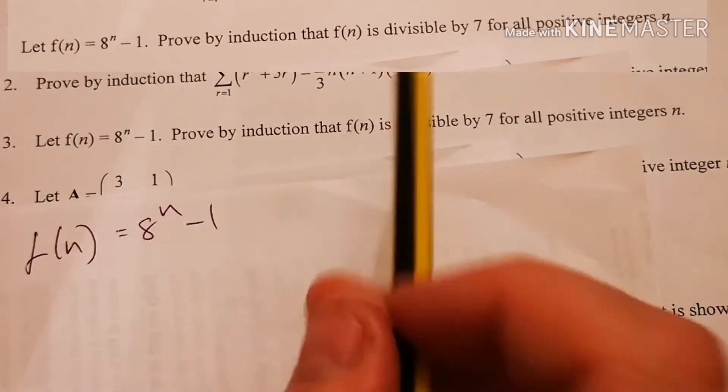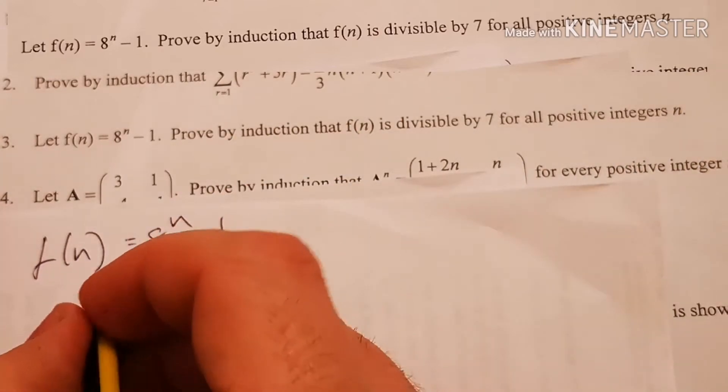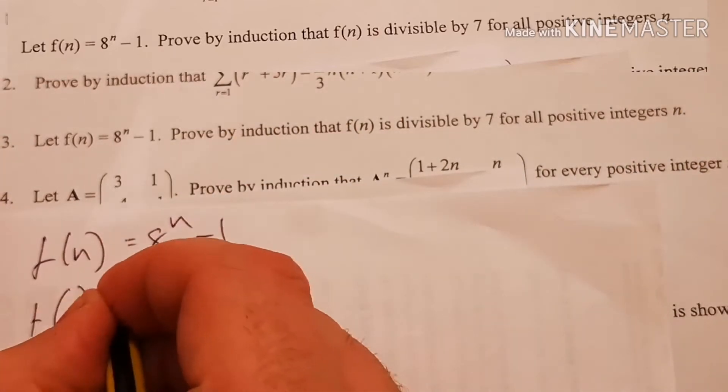Equals a to the power of n minus 1. Prove that f(n) is divisible by 7 for all positive integers. So let's do f(1) to see if it works for one number.